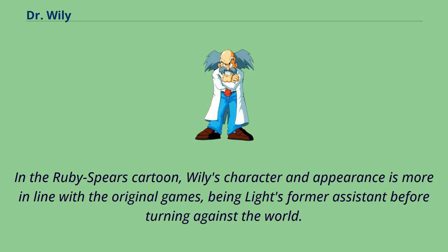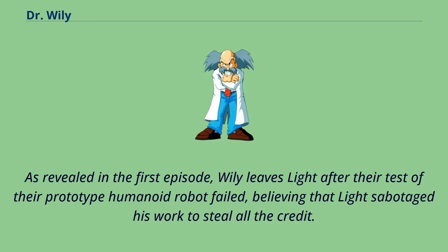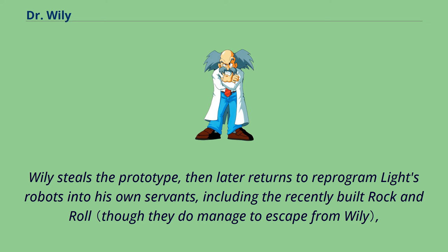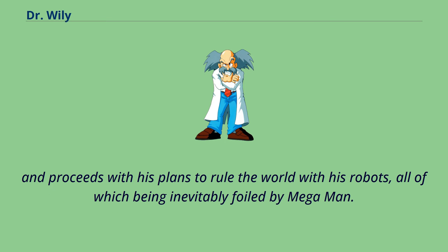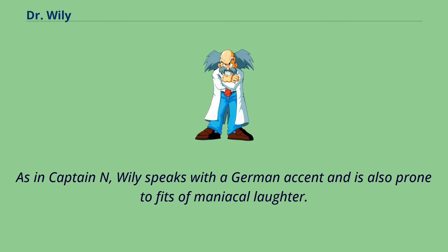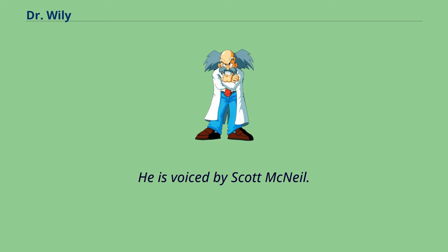In the Ruby-Spears cartoon, Wily's character and appearance is more in line with the original games, being Light's former assistant before turning against the world. As revealed in the first episode, Wily leaves Light after their test of their prototype humanoid robot failed, believing that Light sabotaged his work to steal all the credit. Wily steals the prototype, then later returns to reprogram Light's robots into his own servants, including the recently built Rock and Roll, and proceeds with his plans to rule the world with his robots, all of which are inevitably foiled by Mega Man. As in Captain N, Wily speaks with a German accent and is also prone to fits of maniacal laughter. He is voiced by Scott McNeil.